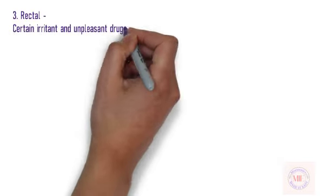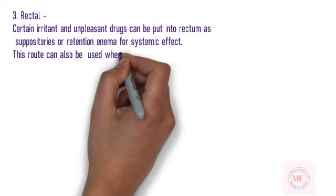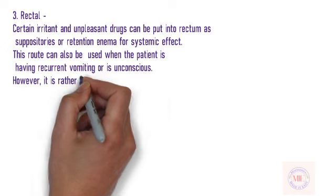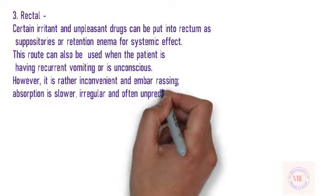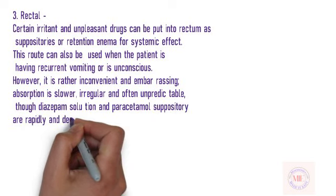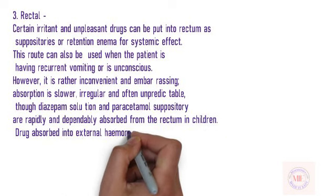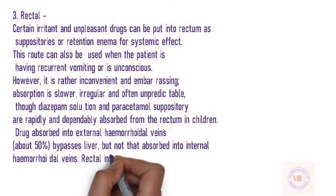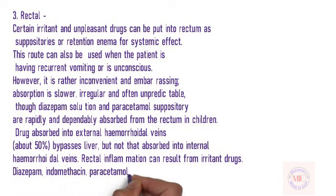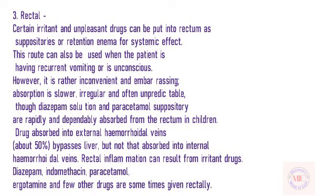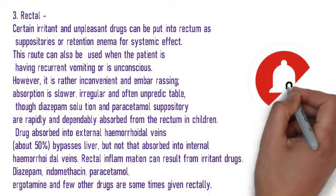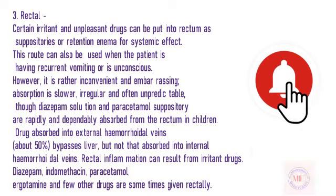Rectal: Certain irritant and unpleasant drugs can be put into the rectum as suppositories or retention enema for systemic effect. This route can also be used when the patient is having recurrent vomiting or is unconscious. However, it is rather inconvenient and embarrassing. Absorption is slower, irregular and often unpredictable, though diazepam solution and paracetamol suppository are rapidly and dependably absorbed from the rectum in children. Drug absorbed into external hemorrhoidal veins (about 50%) bypasses the liver, but not that absorbed into internal hemorrhoidal veins. Rectal inflammation can result from irritant drugs. Diazepam, indomethacin, paracetamol, ergotamine and few other drugs are sometimes given rectally.